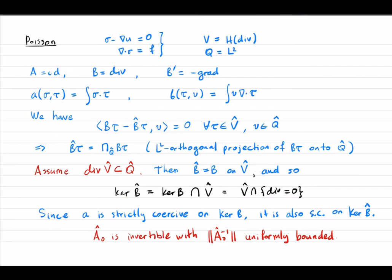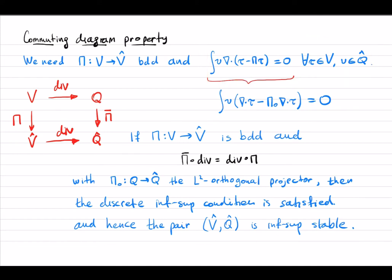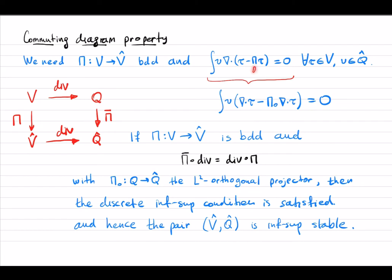The main remaining problem is the inf-sup condition for B. To check it, we use the Fortin operator approach. We need the Fortin operator sending V to V-hat to satisfy a certain property. Under the assumption that the divergence of V-hat is a subset of Q-hat, we can follow the commuting diagram approach.